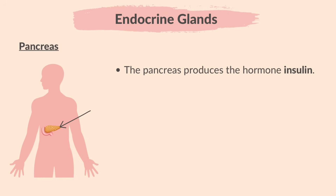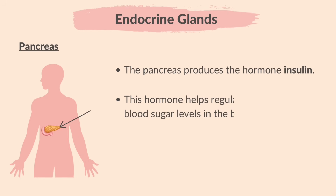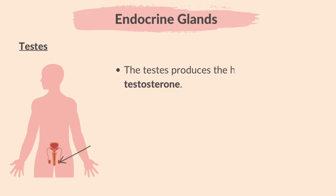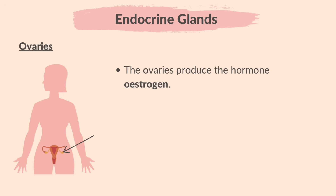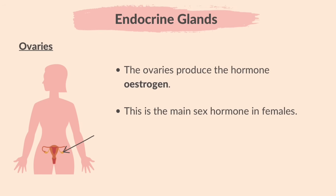The pancreas produces the hormone insulin, which helps regulate and lower blood sugar levels in the body. The testis produces the hormone testosterone, the main sex hormone in males — it stimulates the development of male secondary sexual characteristics. The ovaries produce the hormone estrogen, the main sex hormone in females, which promotes the development and maintenance of female characteristics of the body.